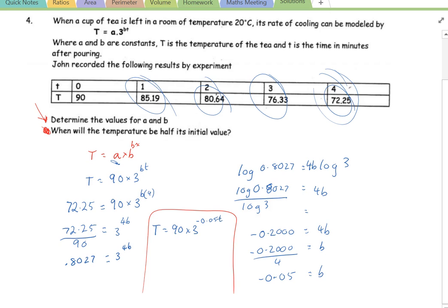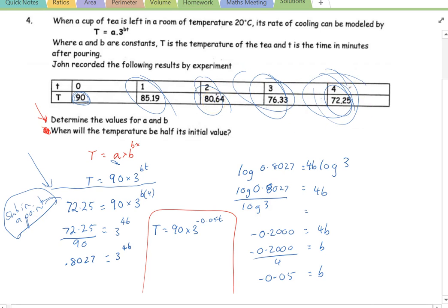Alright, so two steps here. First of all, you want to find your initial value. That was that value here. And then once you have your initial value, then you sub in a point. And it could be any point, or any of these four. If you're only given one point, just use one point. And then that's how you'll find your B value.